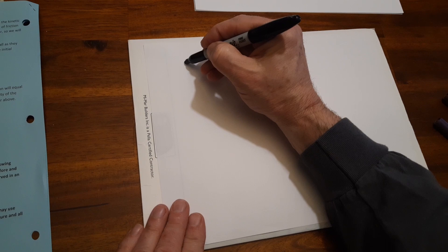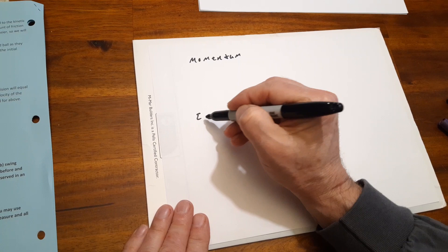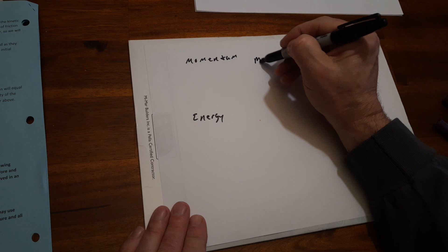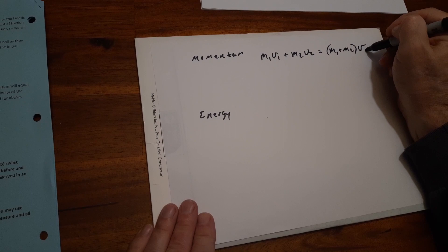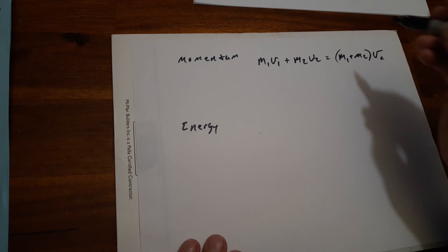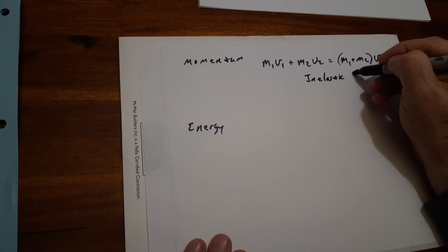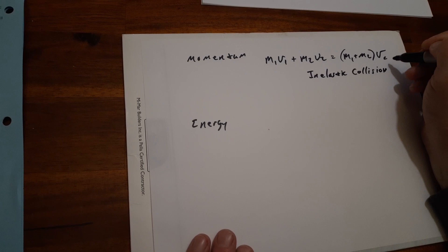Momentum is easy: M1V1 + M2V2 equals V combined. This would be for any inelastic collision. Any inelastic collision, although momentum is conserved, energy is not.